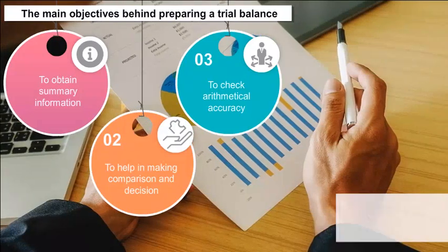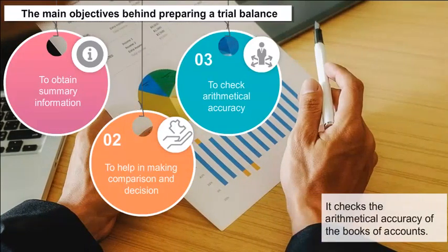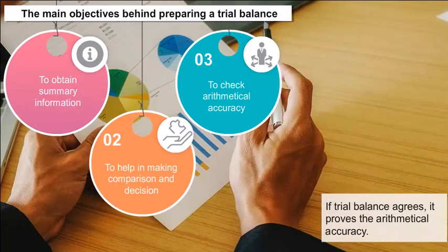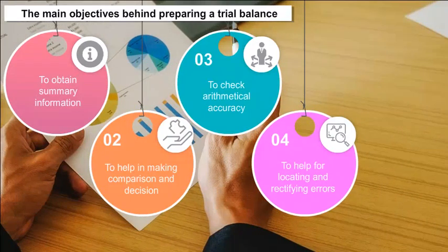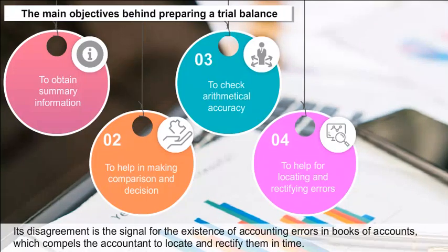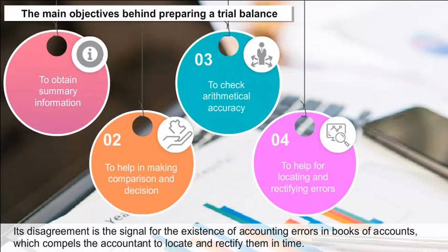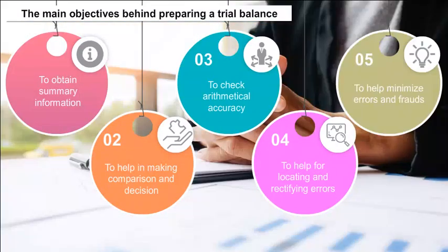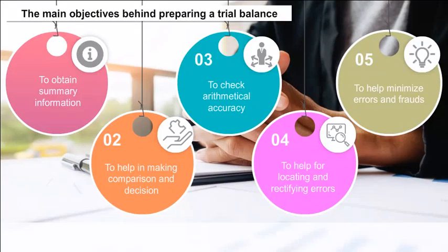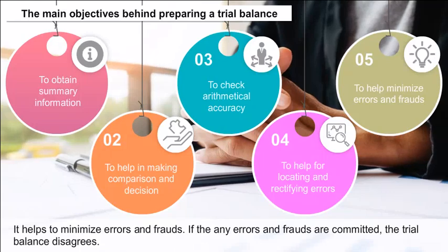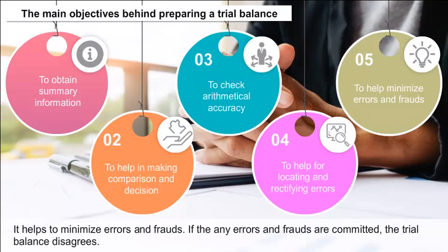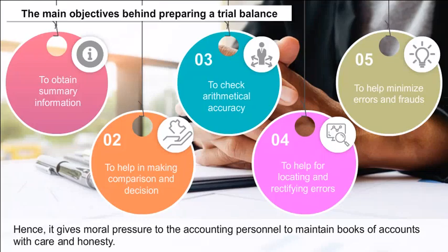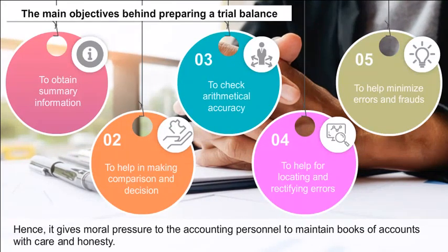3. To check arithmetical accuracy — it checks the arithmetical accuracy of the books of accounts; if the trial balance agrees, it proves arithmetical accuracy. 4. To help for locating and rectifying errors — its disagreement signals the existence of accounting errors, compelling the accountant to locate and rectify them in time. 5. To help minimize errors and frauds — it gives moral pressure to accounting personnel to maintain books of accounts with care and honesty.